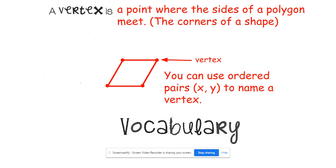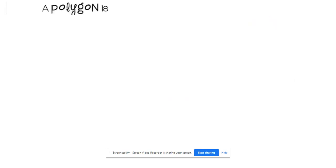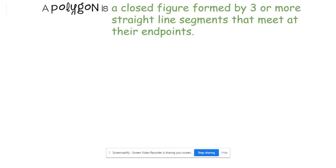So right here we have a four sided figure otherwise known as a parallelogram. Look at those four corners. Each of those corners is called a vertex. The vertexes are made up of ordered pairs or coordinate points. You're never supposed to use a definition within a definition. So let's define what a polygon is. A polygon is a closed figure formed by three or more straight line segments that meet at their endpoints.